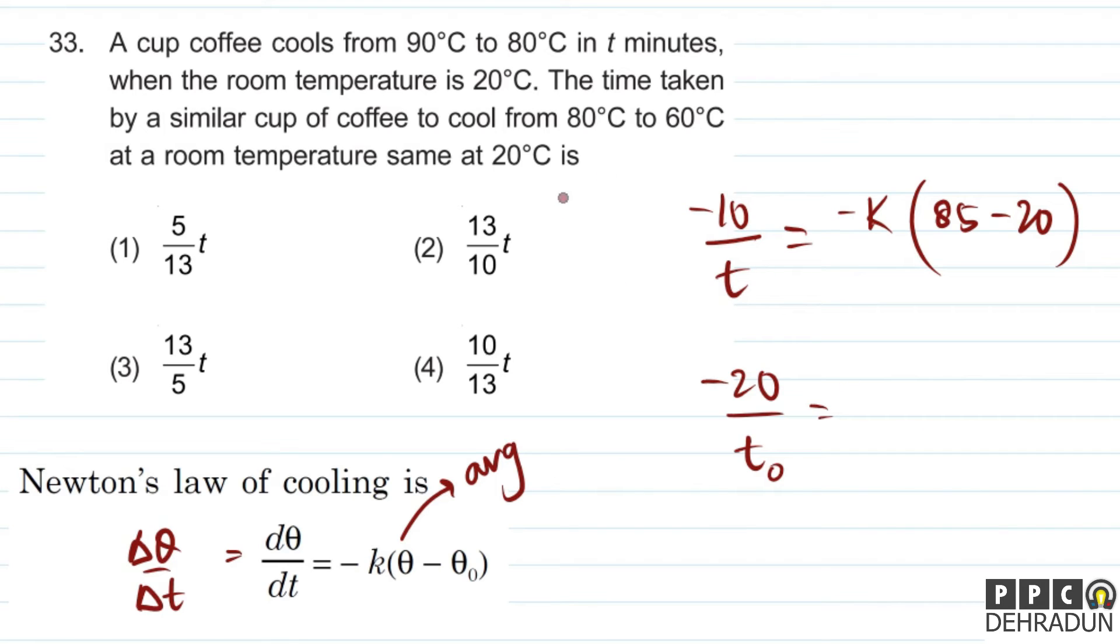It is equal to... since it's a similar cup, the proportionality constant k will remain the same. So minus k times the average temperature, which is 70 for 80 to 60, minus room temperature 20. So minus 20 upon t₀ equals minus k times (70 - 20), which is 50.